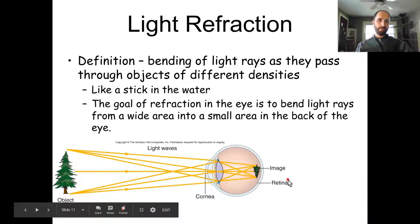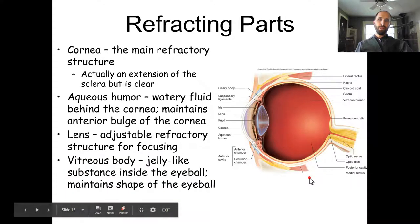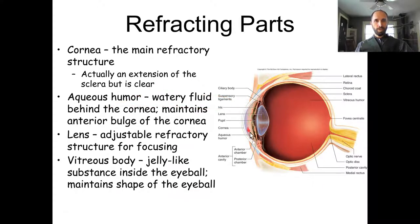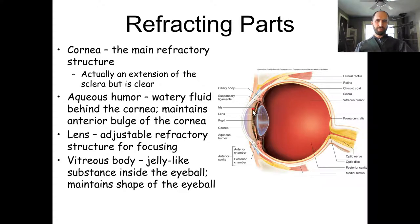The refracting parts are: the cornea, the aqueous humor between cornea and lens. Excess pressure in the aqueous humor — usually because the drain is blocked — causes glaucoma. The fluid keeps being produced but can't escape, so pressure builds up.